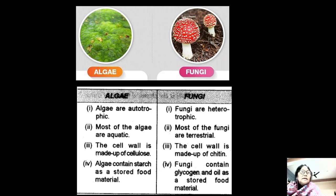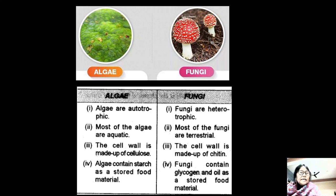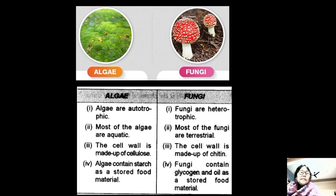The cell wall of algae is made up of cellulose, and the cell wall of fungi is made up of chitin. Algae contain starch as a stored food material, whereas fungi contain glycogen and oil as stored food material.